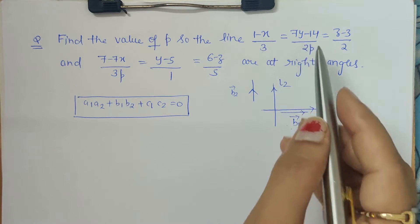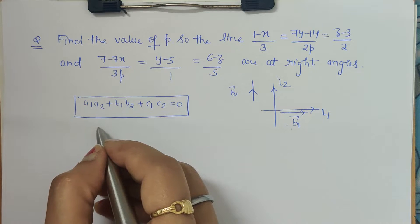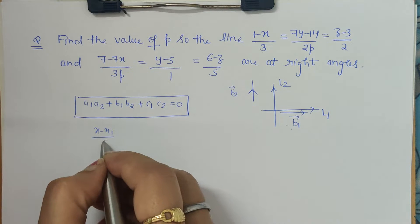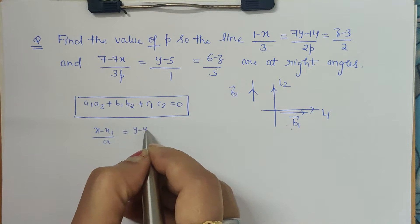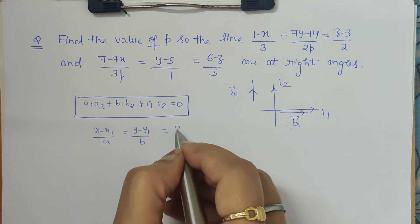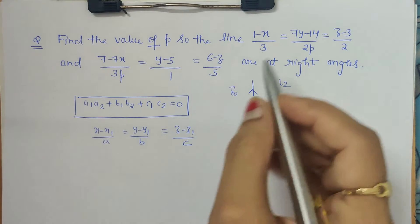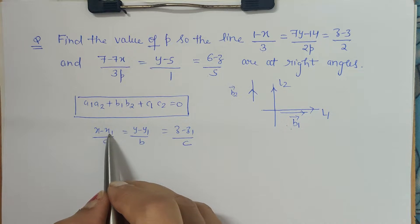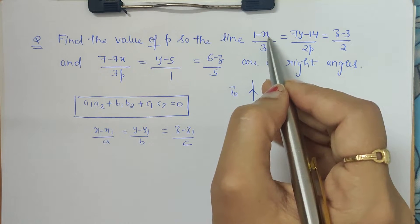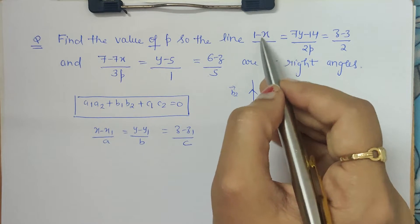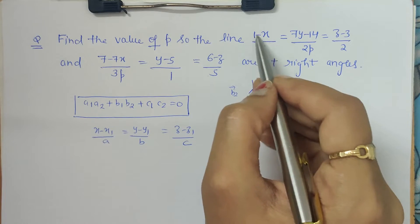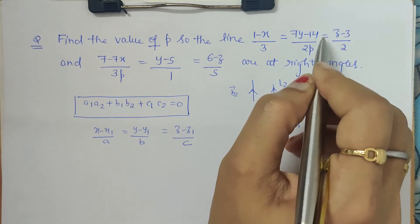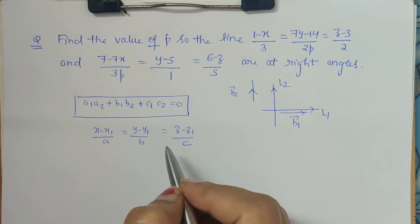We can see it is not in standard form. The standard equation of a line is (x − x1)/a = (y − y1)/b = (z − z1)/c. Here we have '1 − x' but it should be 'x − x1', so we have to change its sign. We need to convert both equations to standard form first.